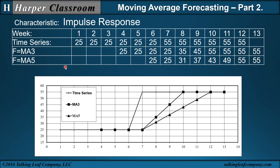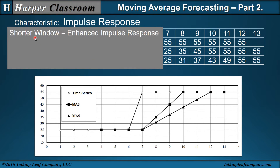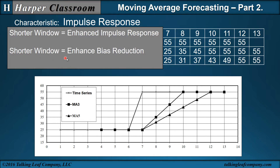With a five-point moving average, once the impulse happens, since the window is five, it takes one, two, three, four, five time periods to respond. So the shorter the window, the faster the response time, and this is referred to as an enhanced impulse response. Also, the difference between the time series — which is an observed value — and the forecast — which is an estimated value — is called bias. If I want to reduce that bias faster, I use a shorter window. So a shorter window also has the enhanced bias reduction characteristic.